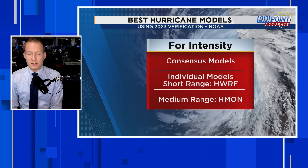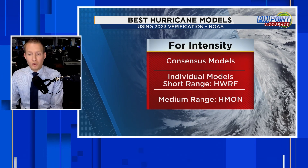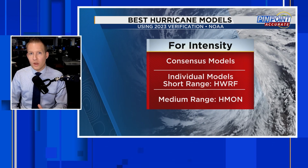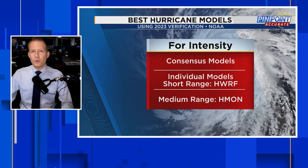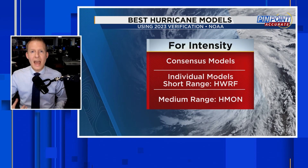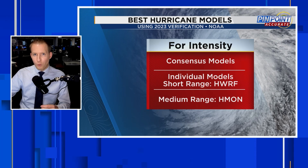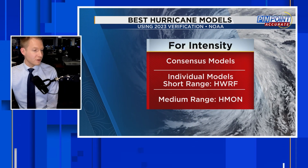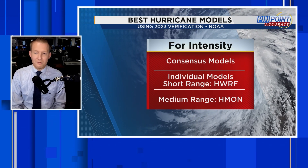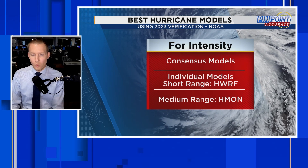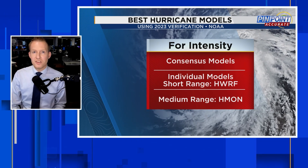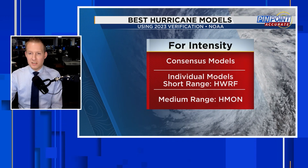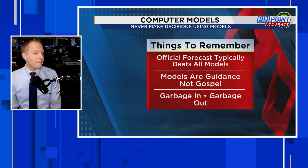For medium range track — up to 120 hours out — in 2023 the HAFS-B took the cake. For intensity, the consensus model came out on top overall, but for individual models in the short range the HWRF won. Keep in mind these hurricane models are really run once a system gets a low-level center — there can be more error than normal before reaching tropical depression or tropical storm status. In the medium range for intensity, the HMON was the winner in 2023.